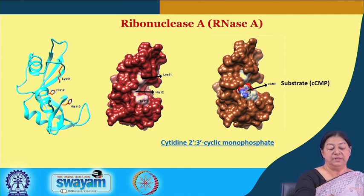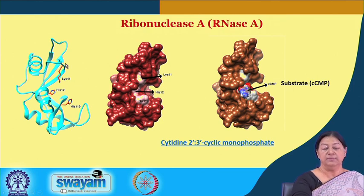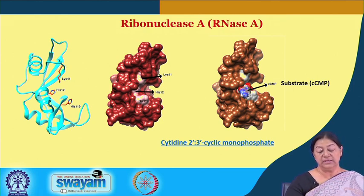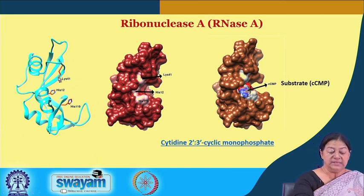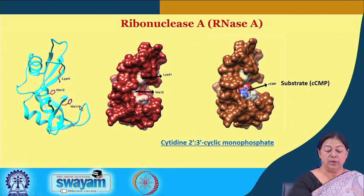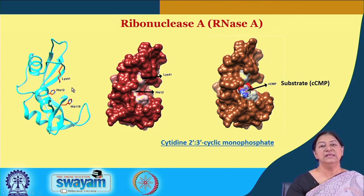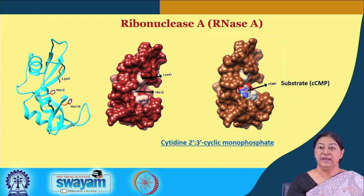A specific example is ribonuclease A, a protein involved in RNA degradation. The most important residues in its active site are histidine 12, histidine 119, and lysine. These residues are basic in nature, meaning something negatively charged will preferentially bind there, because there must be complementarity in charge, pK, and shape.